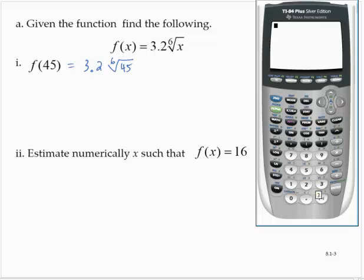What we would do is type 3.2 times, we have to put that multiplication in. Now, the 6th root, what we have to do here is type the 6 first. Then bring up the xth root key, the 5th option. 6th root of x. Not x, but in this case, 45. And hit enter.